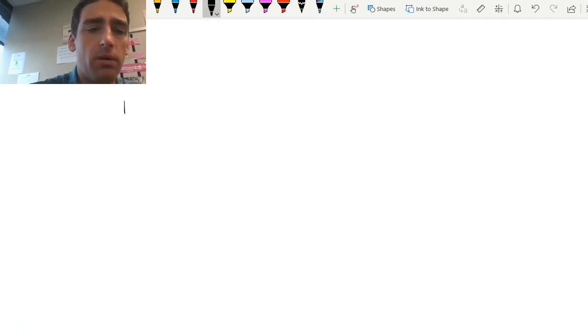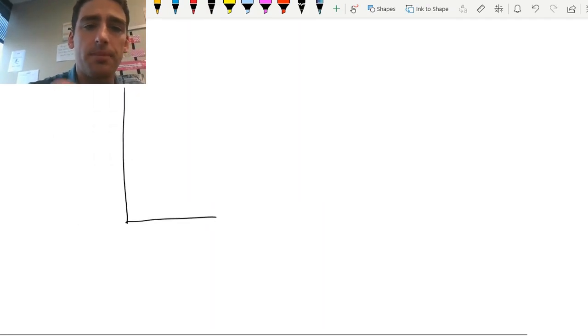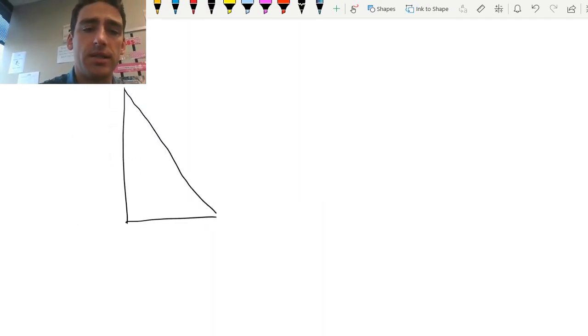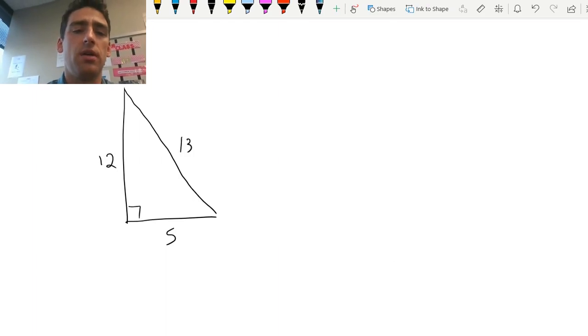So just as a reminder, what we went over yesterday, on Thursday, sorry, what we went over is this. So if we have a right triangle, I'm going to make it a 5, 12, 13 right triangle.